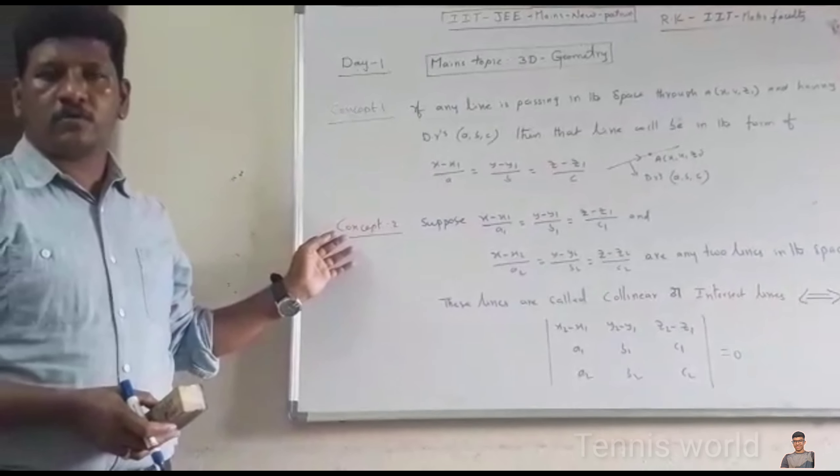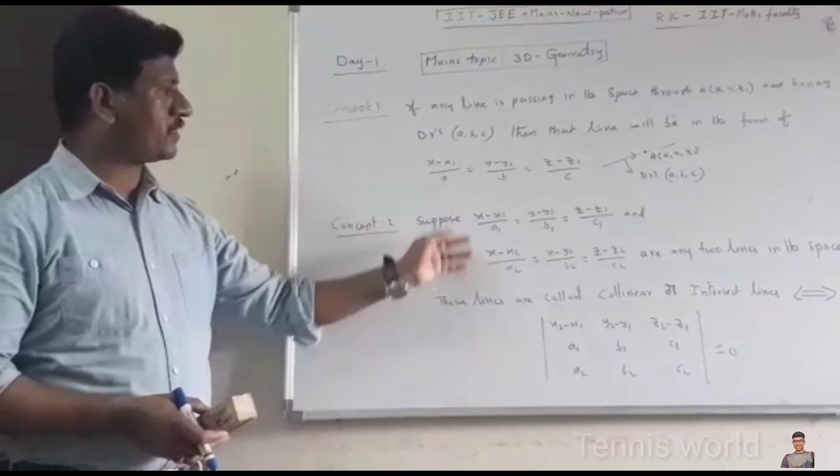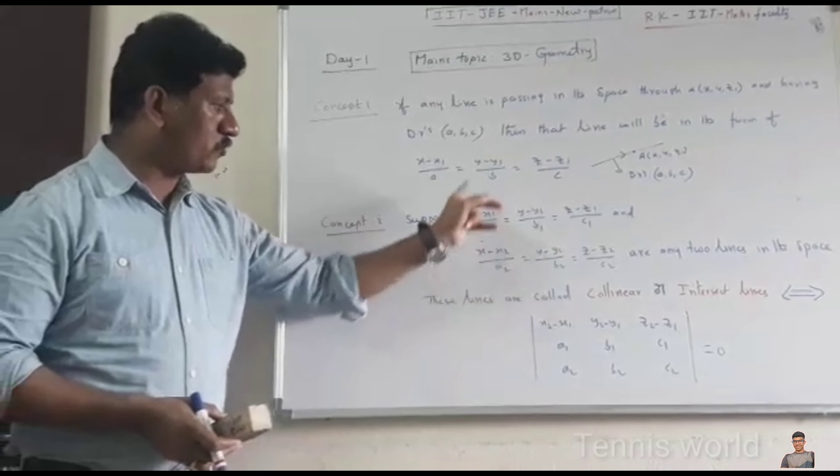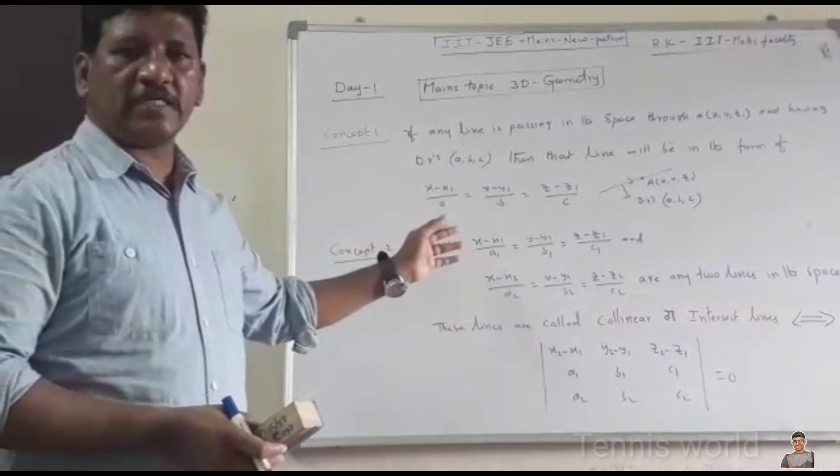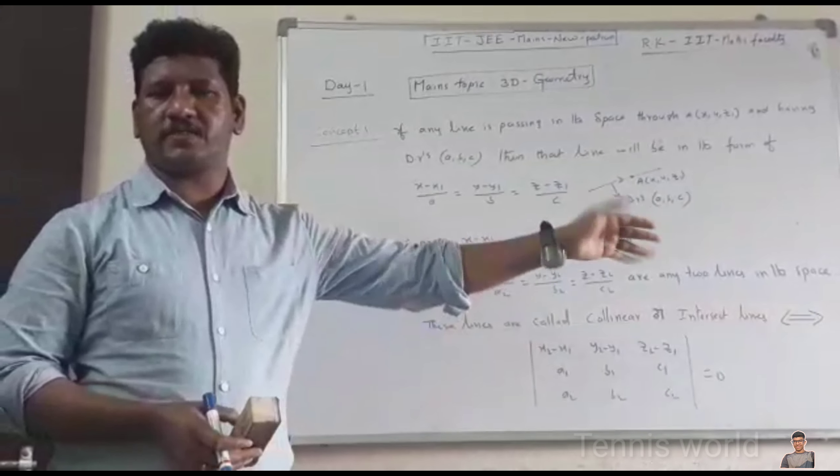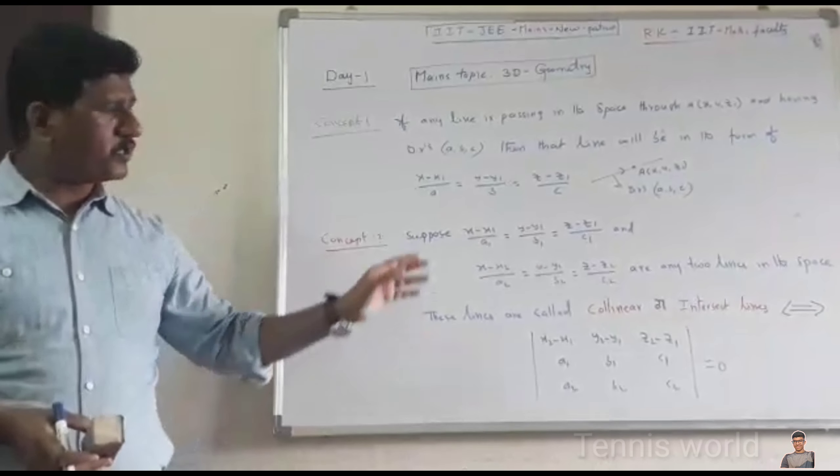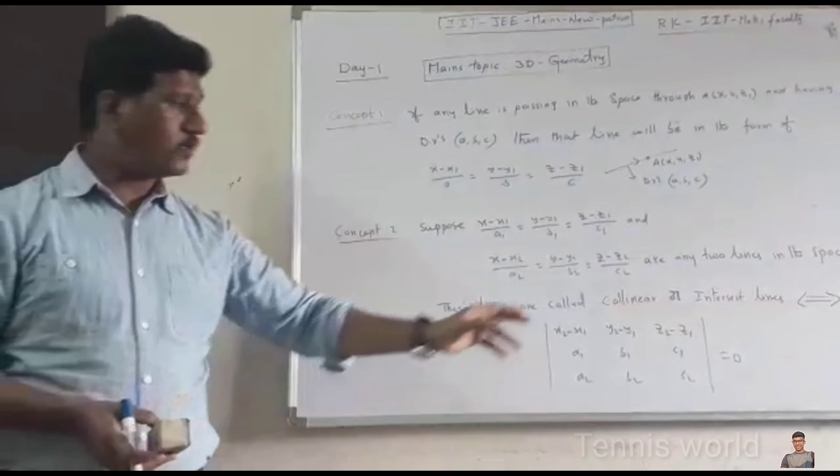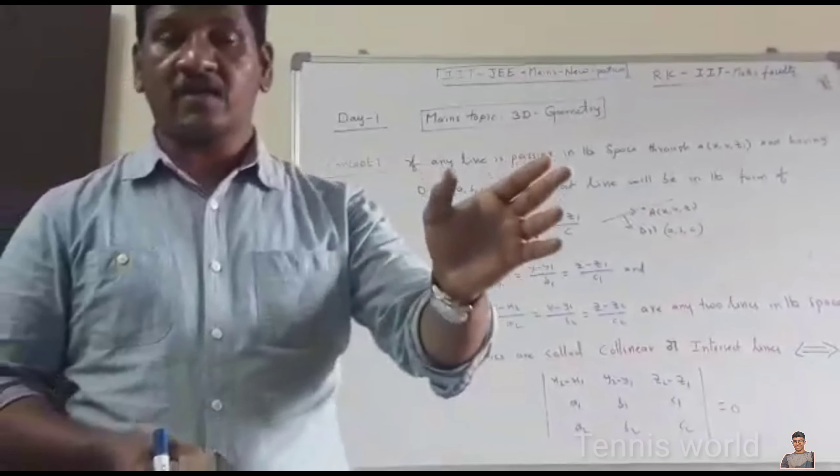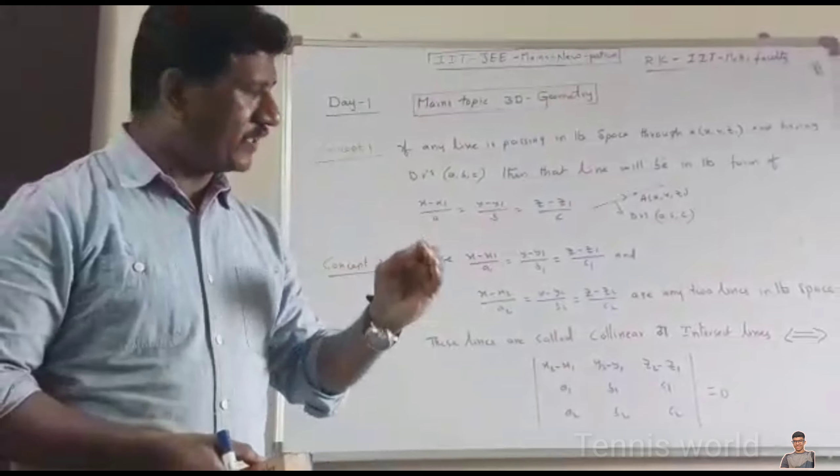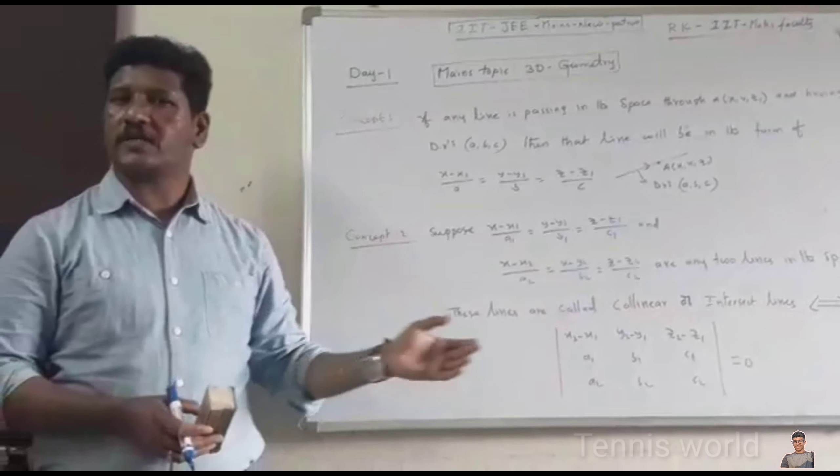Now, let us come to concept number 2. Suppose I am taking two lines. Actually these two lines are passing in the space. Now, I am calling these two lines coplanar lines or intersecting lines when, if and only if, when these two lines are satisfied with this condition.